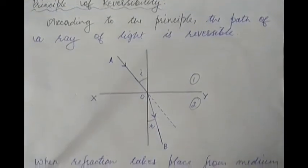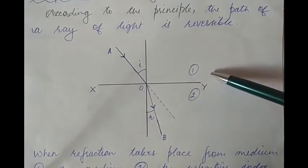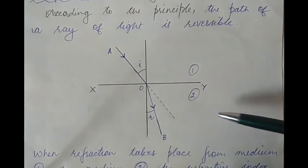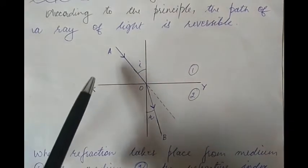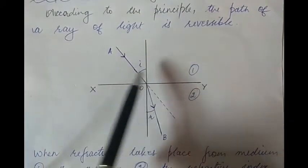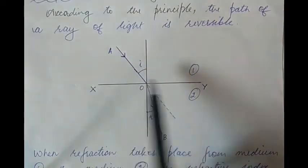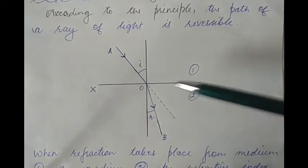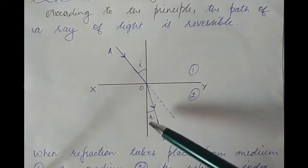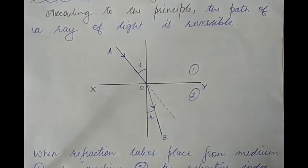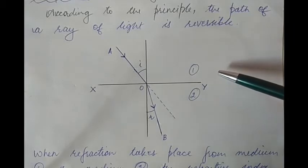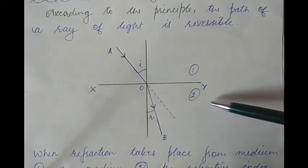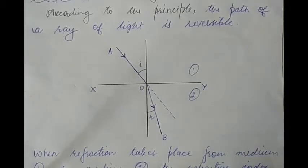Let us look at this example. We have medium 1 and medium 2, and a ray of light being incident from medium 1 along AO, making an angle of incidence equal to I. The ray of light is getting refracted along OB, making an angle of refraction equal to R. Medium 1 is the rarer medium and medium 2 is the denser medium in our example.